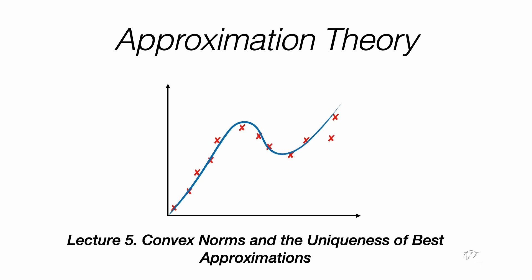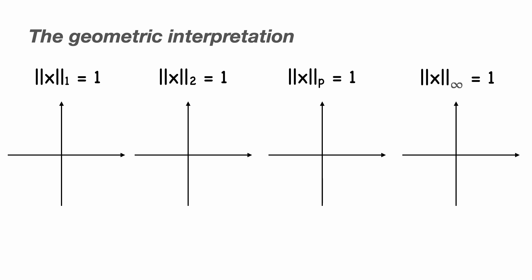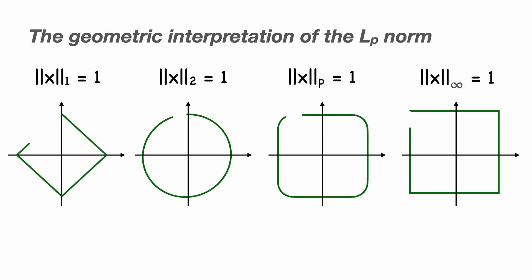In this video, we'll discuss what it means for a norm to be convex and how this property leads to unique best approximations. If you've encountered the concept of a norm before, it's likely you've seen a diagram similar to this. These plots show points or vectors about the origin for which the norm of these points are all the same, they're equal to 1, and we see different shapes for different LP norms.